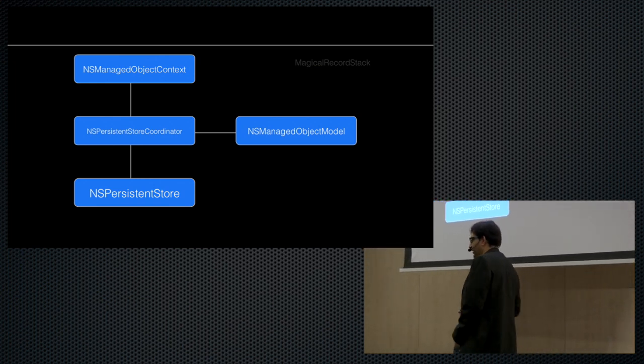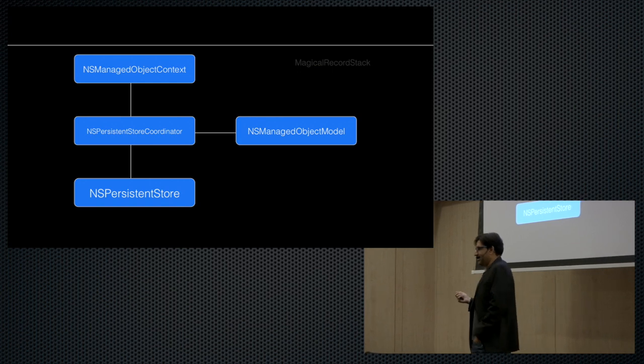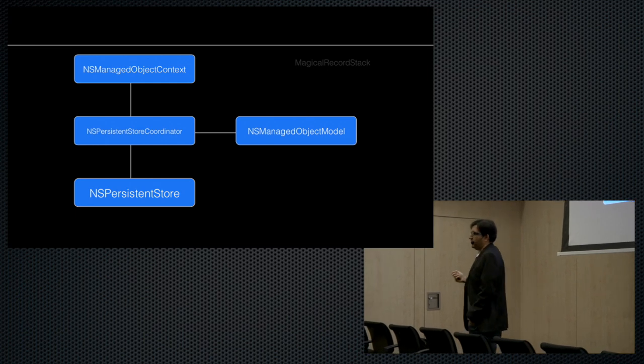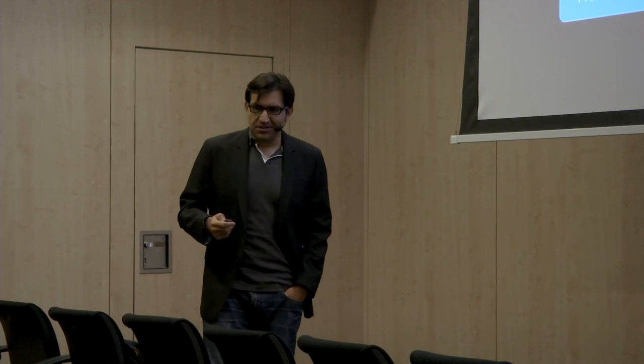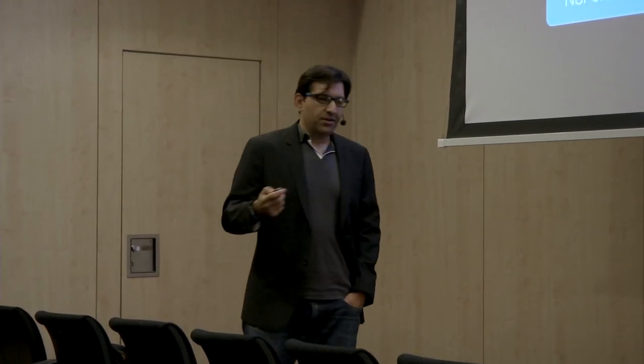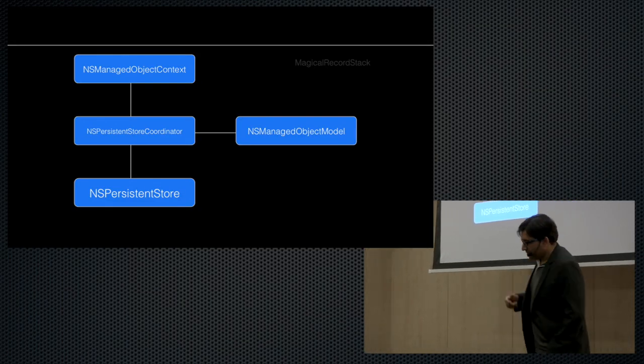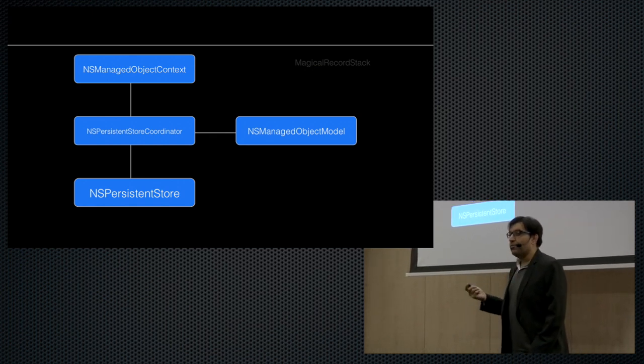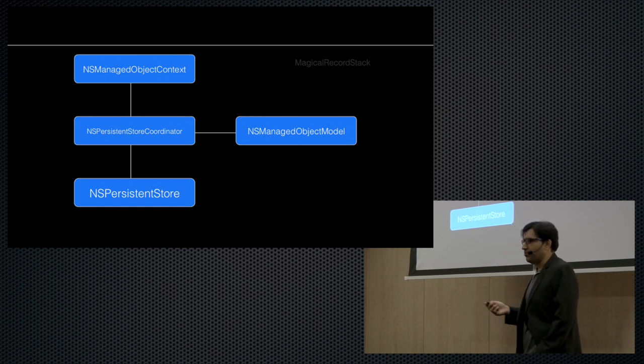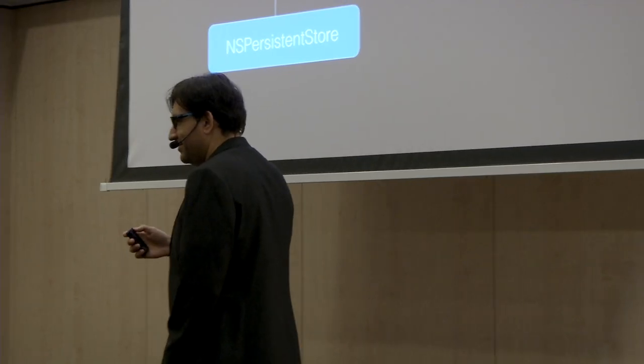Why does Core Data need all these objects and configuration when something like NSCoder or a plist format would do? Well, it handles objects directly and you have various performance characteristics and architectural flexibility. It solves different problems for different things in your app. A question from the audience: can you think of this whole stack as a serialization framework? Yeah — it's an object graph persistence framework, and the serialization happens in the NSManagedObject itself. NSCoder and plist are all different types of serialization within the Cocoa framework.